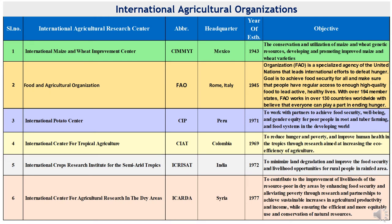Third is CIP — International Potato Center — founded in 1971 with headquarters at Peru. It is a research organization for development focusing on potato, Andean roots, and tuber crops. Fourth is CIAT — International Center for Tropical Agriculture — headquartered at Colombia, established in 1969. CIAT is a non-profit research and development organization dedicated to reducing poverty and hunger while protecting natural resources in developing countries.